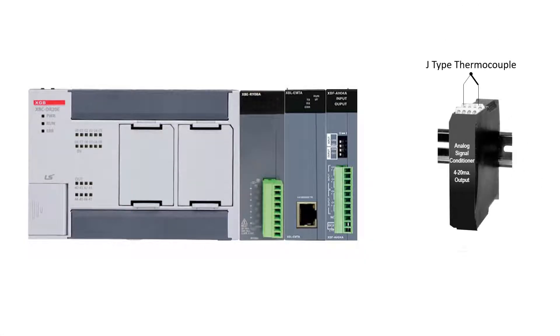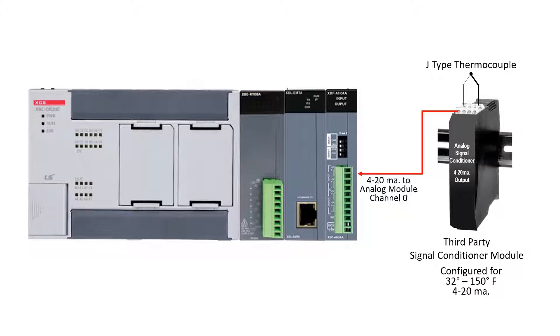The J-type thermocouple is connected to a third party signal conditioner. The signal conditioner is configured for a full scale span of 32 to 150 degrees Fahrenheit. A 4 to 20 milliamp analog signal is sent to channel 0 of the PLC analog input module. Analog channel 0 has been configured in the XG5000 programming software for 0 to 4000 counts representing 32 to 150 degrees Fahrenheit.